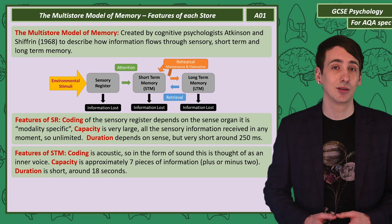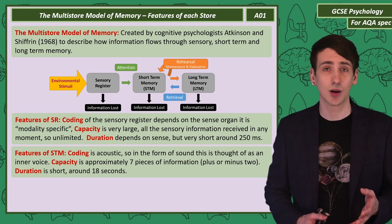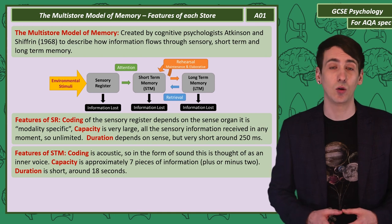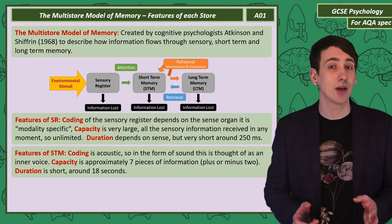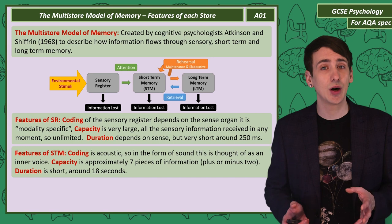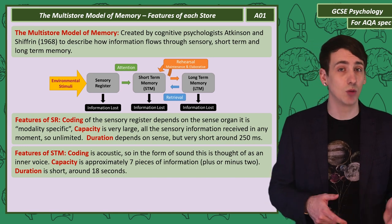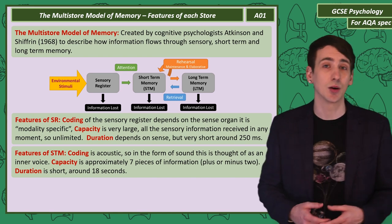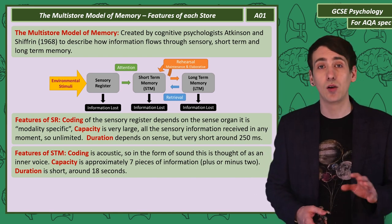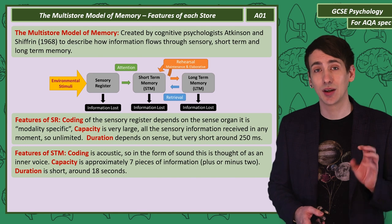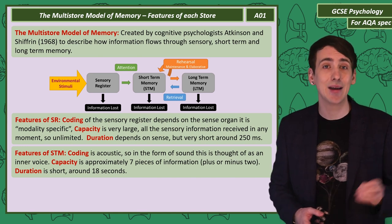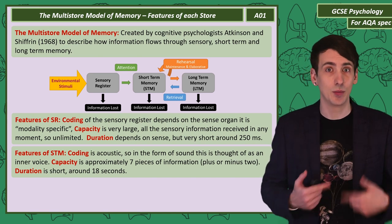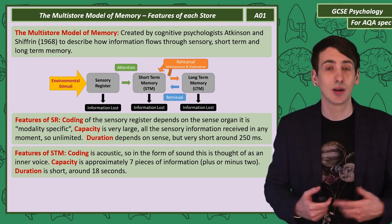Moving to the short-term memory store. The coding is acoustic — so an inner voice. The capacity, meaning the number of items you can hold, seems to be very small, around seven items. With some variability, some people can remember a little more or a little less — we say seven items plus or minus two. How long you can hold that information is also very short, around 18 seconds. Anything not passed to long-term memory by then, or repeated with your inner voice, is lost.